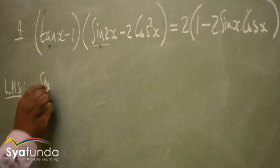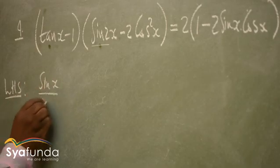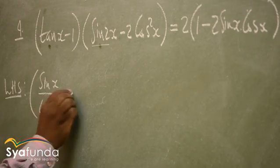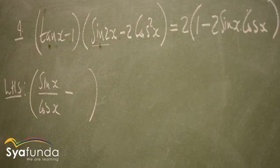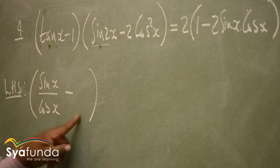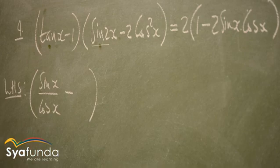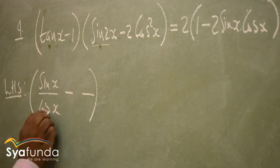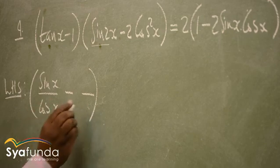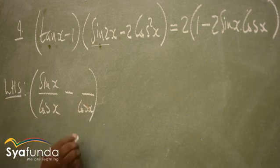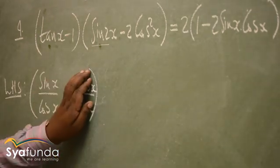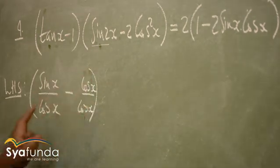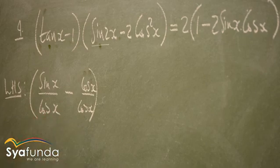So tan x is the same as sin x over cos x, minus 1. I like to work with common denominators — where the denominators are the same when working with fractions. So I'm going to change my 1 into a fraction with cos x as the denominator, so this will be minus cos x over cos x.